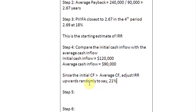Step five is to find out the NPV of the project at 21% and see if it is zero. If it is zero, then 21% would be our internal rate of return. If it is not zero, we will have to adjust our discount rate until we find a rate where NPV becomes zero — at which point that would be our internal rate of return.